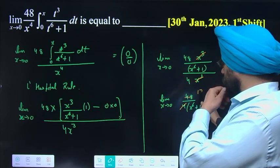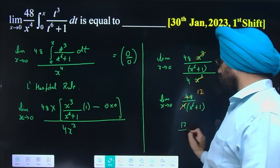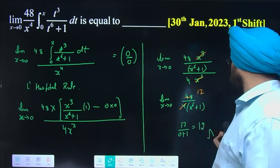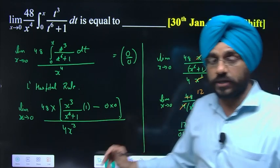This simplifies to 12. Put x value 0: 12/(0 + 1), answer is 12. 12 is the final answer. Clear students, thank you students.